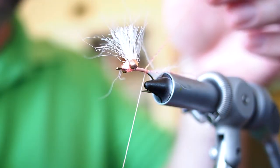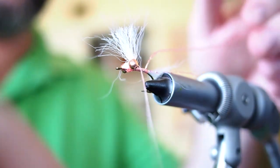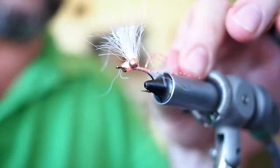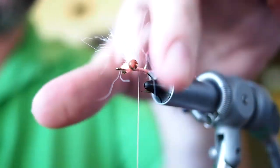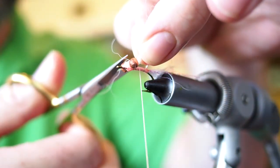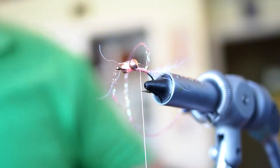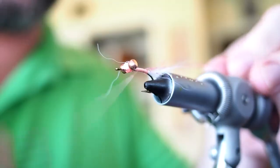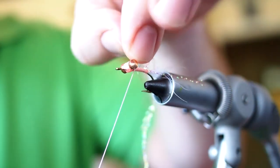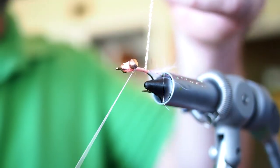Now we've got all the tag end here of the crystal flash. Just hold that up and advance your thread. Before we do anything, let's go ahead and cut all the tag end of the kip tail out. We're going to extend that all the way up to the eye. Then we will do the same with the tag end of the crystal flash.